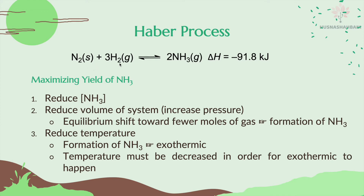N₂ reacts with H₂ to produce 2NH₃. The delta H is negative, meaning the forward reaction is exothermic and the reverse reaction is endothermic. In order to maximize the yield of NH₃, the concentration of NH₃ must be reduced, so the equilibrium position will shift to the right.